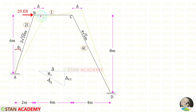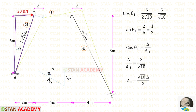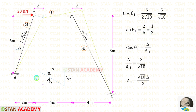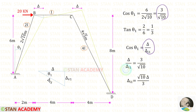This angle and this angle will be the same. So if this angle is theta1, this angle also will be theta1. Let us take this triangle. In this triangle, cos theta1 is equal to 6 upon 2 root 10, which gives us 3 upon root 10. Tan theta1 will be equal to 2 upon 6, which gives us 1 upon 3. Now let us take this triangle. In this triangle, cos theta1 is equal to delta upon delta I1. We can equate these two. Finally, we will get the relation delta I1 is equal to root 10 delta upon 3.